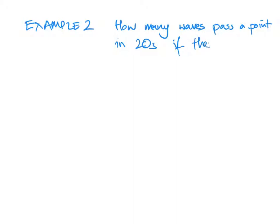Example 2. We're keeping these examples still fairly straightforward. They're not what we call contextualized—there's not lots of reading to get the information you need. How many waves pass a point in 20 seconds if they have a frequency of 5 kHz?